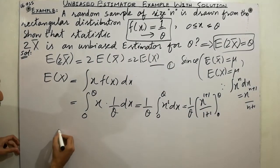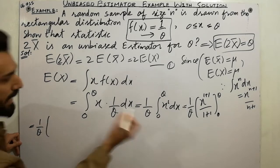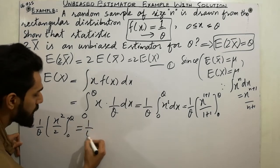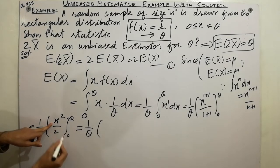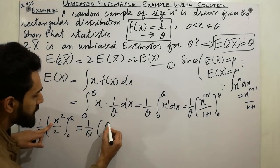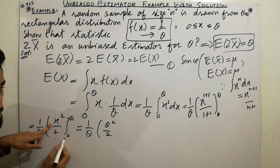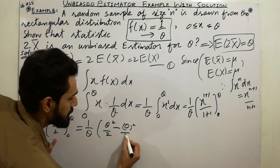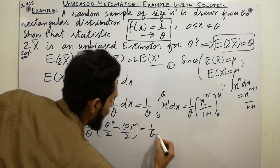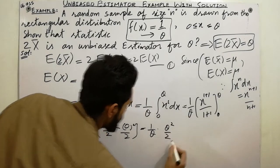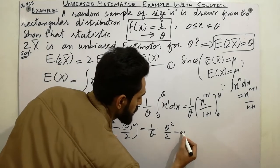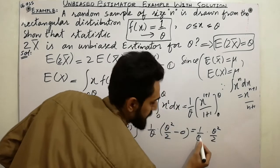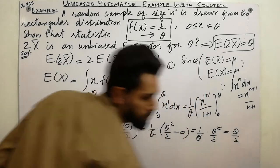So we have (1/theta) × [x²/2] evaluated from 0 to theta. Substituting the upper limit: theta²/2, and the lower limit: 0²/2 = 0. This gives (1/theta) × (theta²/2 − 0) = (1/theta) × (theta²/2). The thetas cancel, giving theta/2.